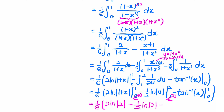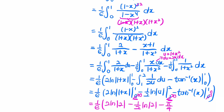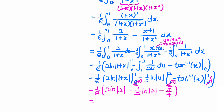The arctan of 1 is π/4 and arctan of 0 is 0. Therefore our final answer is ln(2)/4 minus π/24, and so we are done.